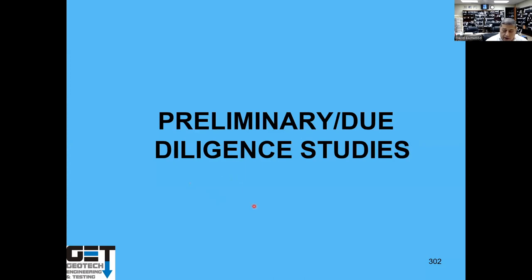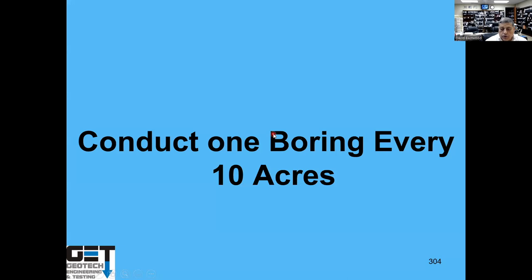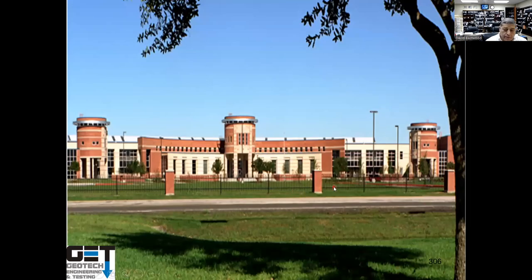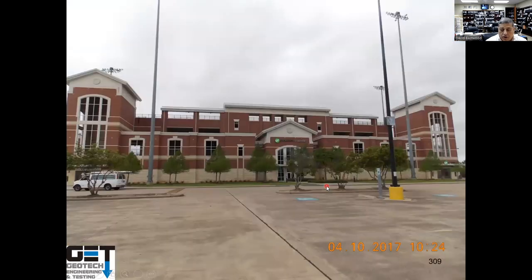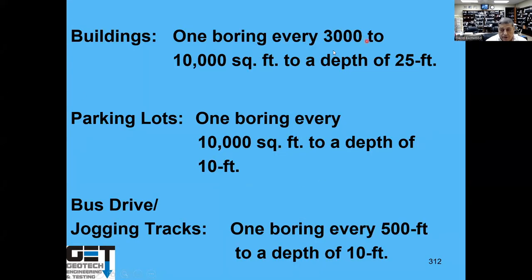Typically, you want to be worried about projects with PVR greater than about 4.5 inches. You conduct borings every 10 acres. The number of borings for typical school buildings: one boring every 3,000 to 10,000 square feet depending on the size of the building, to a minimum depth of 25 feet. In parking lot areas, one boring every 10,000 square feet to a depth of 10 feet. Bus drive areas: one boring every 500 feet along the drives, same with jogging tracks, to a depth of 10 feet. For stadium poles, depending on the pole size, you need at least a 30-foot boring. In auditoriums, every 3,000 square feet you need 25-foot borings.